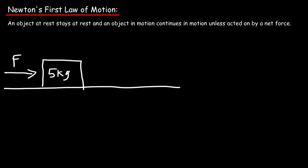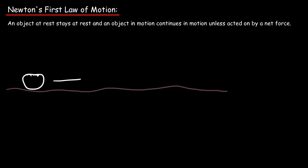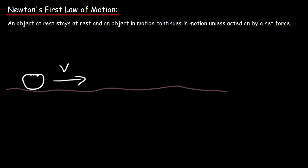Now what about the second part: an object in motion continues in motion? Imagine a carpet floor — you place a ball on it and give it a push. The ball is moving, but what happens? If you roll a ball on a carpet floor, it will eventually come to a stop. That's because friction is a force that opposes motion; friction always causes objects to slow down and eventually stop.